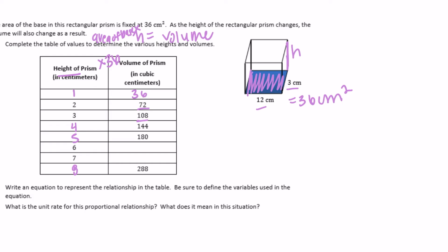So: 1 times 36 is 36; 2 times 36 is 72; 3 times 36 is 108. For height 6: 36 times 6 — 6 times 6 is 36, carry the 3, 6 times 3 is 18, plus 3 is 21 — that's 216. Height 7: 216 plus 36 is 252 cubic centimeters. And height 8 is already given.